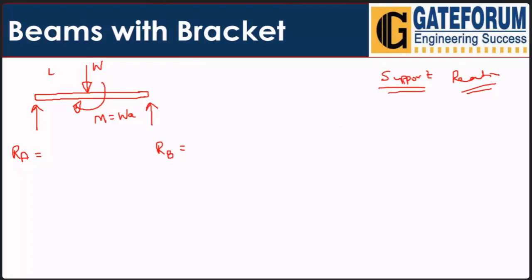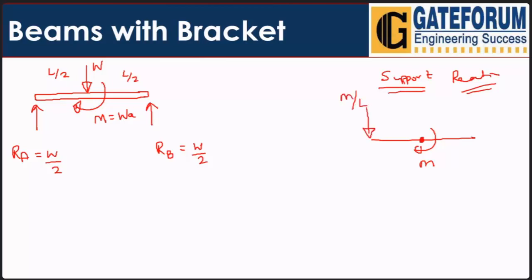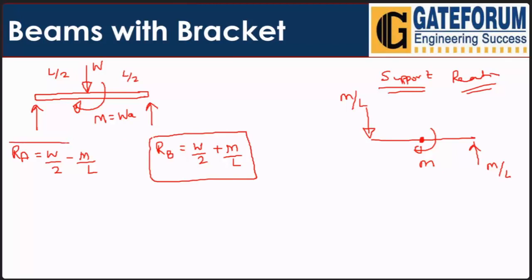So the support reactions are: RA = W/2 − M/L and RB = W/2 + M/L, written directly using shortcuts without lengthy calculation. Now we can find the bending moment at any section.